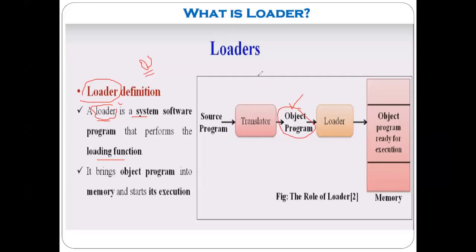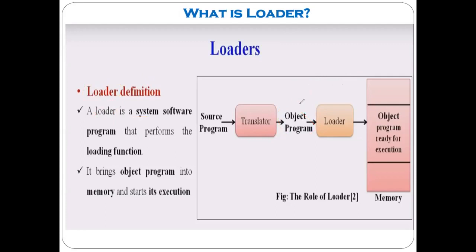When we compile the source program, we utilize the translator as a compiler; when we assemble, we utilize the assembler. That output is the object program. Before the loader, there is one more system software utilized — the linker. The linker links the different object modules together and generates one executable file. That is the next part we will discuss. But first we are discussing what exactly the loader is.